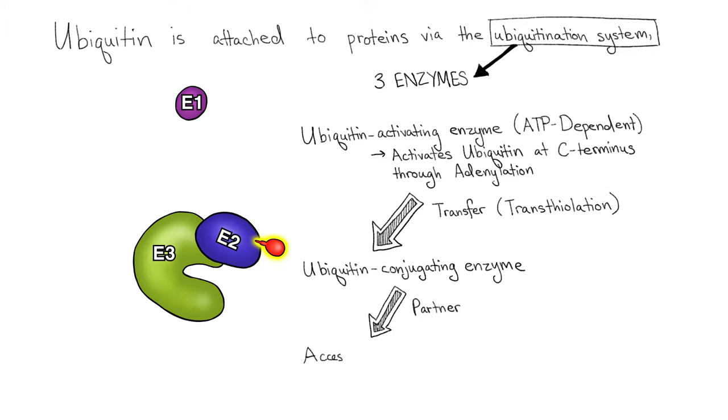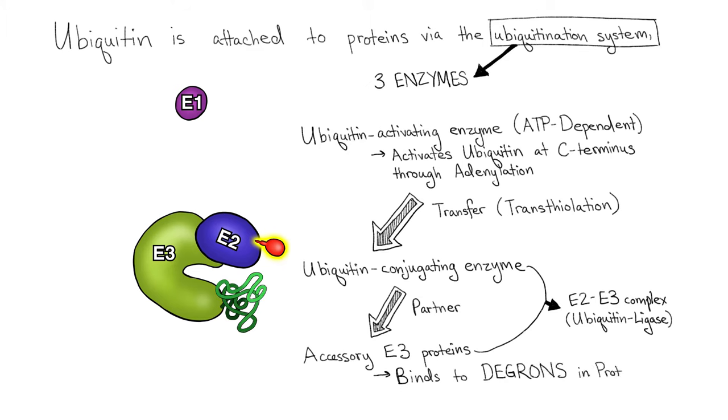E2s partner with accessory E3 proteins, and together the E2-E3 complex is called ubiquitin ligase. E3 works by binding to degrons in the protein substrate, which are portions of proteins that allow for regulation of protein degradation via specific degradation signals. The bond formed when E3 ligates the C-terminal carboxyl group of the ubiquitin to a lysine residue on the substrate protein is an isopeptide bond.